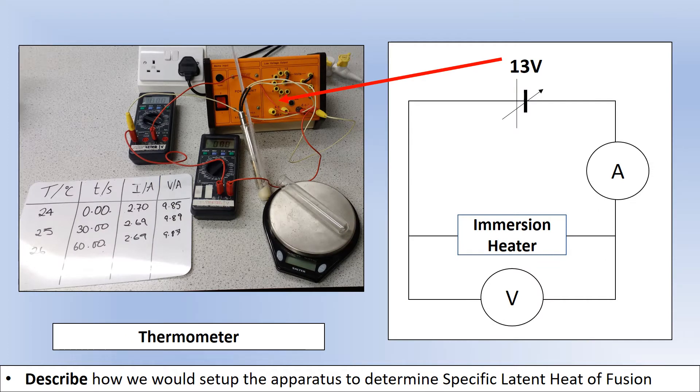In terms of thinking about how we'd write a plan for this experiment, a useful thing to do is a circuit diagram to show how you'd set the equipment up. We've got a power pack at 13 volts. We've got an ammeter on the 10 amp setting because we're going to get quite big currents. We've got an immersion heater that's supplying the electric thermal energy. And we've got a voltmeter set up on the 20 volt setting. We've got a thermometer embedded inside the stearic acid so we are measuring the temperature of the stearic acid.